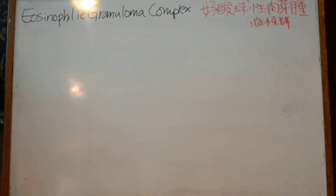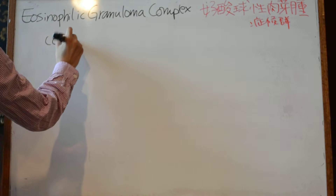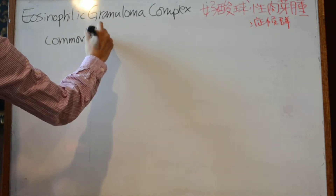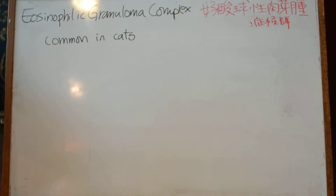Today's review is about eosinophilic granuloma complex. Eosinophilic granuloma complex is common in cats, but also occurs in dogs and horses.